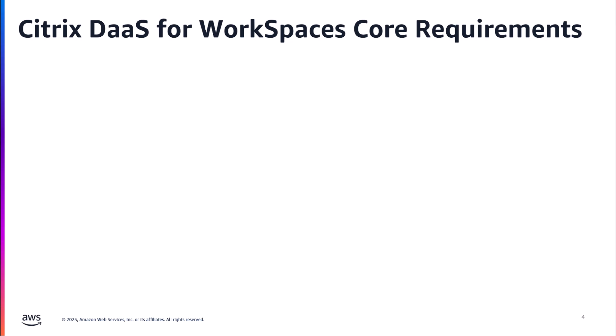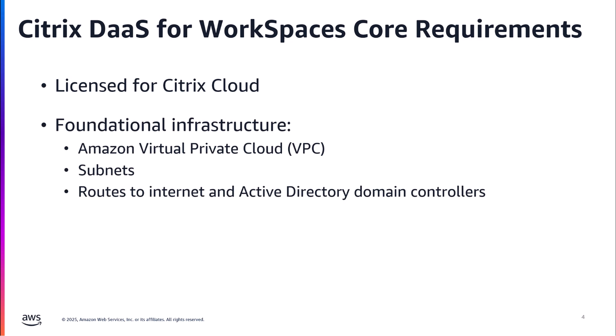So what are some of the requirements to get started with Amazon Workspaces Core? The first is that you need to be licensed for Citrix Cloud — this is Citrix DAS, their cloud-based solution product. For those currently on Citrix CVAD or their on-prem solution, you do need to have licenses for Citrix Cloud. This video assumes that you have the foundational AWS infrastructure already in place for a Workspaces environment, and in the description below we'll have some links to the requirements from a Workspaces perspective.